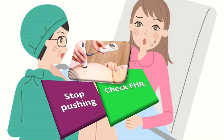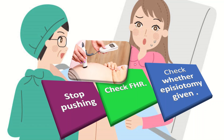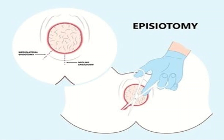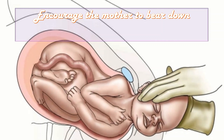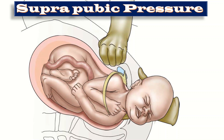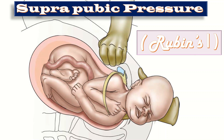I will check whether an episiotomy has been given; I will give a generous episiotomy or extend it if already given, to provide space to enter the vagina. I will then check for the anterior shoulder. If it has entered the pelvis, I will encourage the mother to bear down synchronously with uterine contractions and apply moderate traction to deliver the baby. I will ask my assistant to apply suprapubic pressure — Rubin's 1 — in the direction of the chest to make the shoulder oblique. Ninety percent of babies deliver with this method.